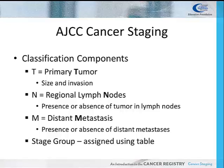For AJCC cancer staging, the classification components include T, N, M, and stage group. T represents the primary tumor, designating the size and/or invasion of the tumor. N represents regional lymph nodes, designating the presence or absence of tumor in the regional lymph nodes. M represents distant metastases, designating the presence or absence of distant metastases. With this information, a stage group is assigned using a table developed for each cancer site. For some cancer sites, the grade of the tumor and other prognostic factors are also taken into consideration when assigning the AJCC stage group.